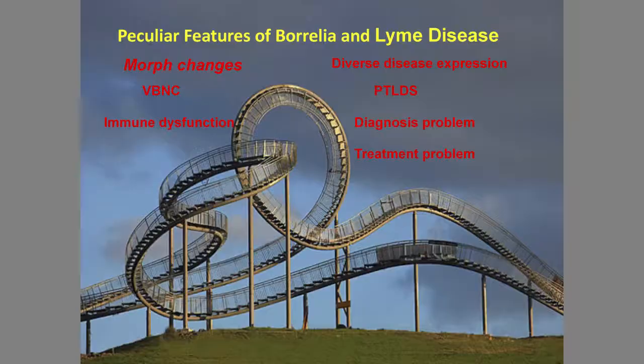It's a unique feature of the disease, and as a microbiologist I need to bring this up. The organism, as it grows in different phases, actually changes its form — changes morphology from the spirochetal form to round body form, and also to microcolony aggregates, like a biofilm-type structure.